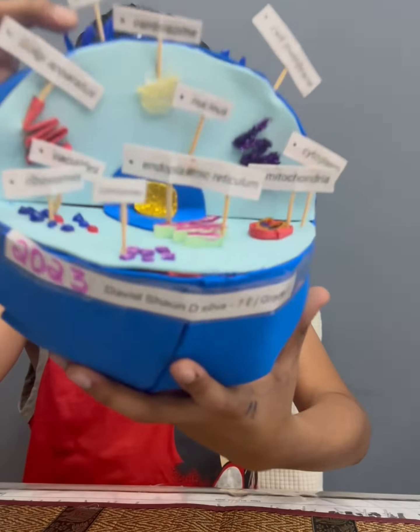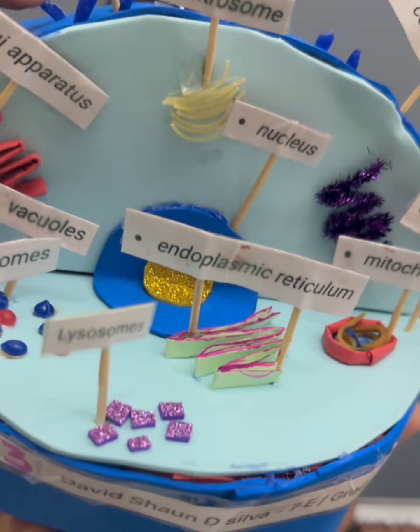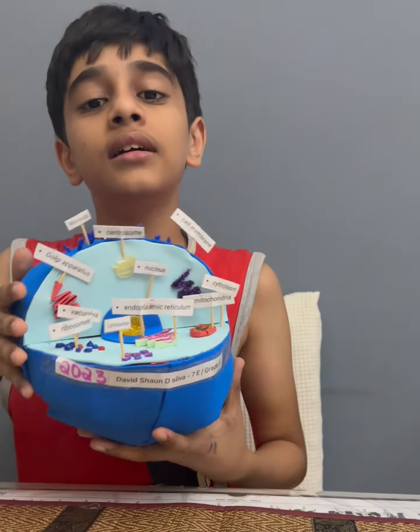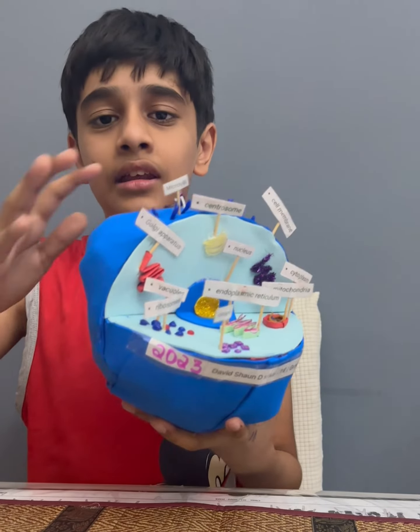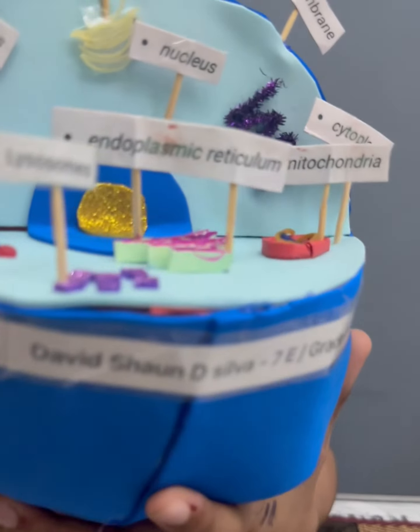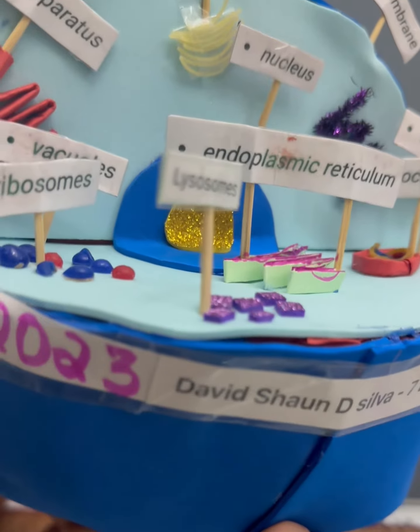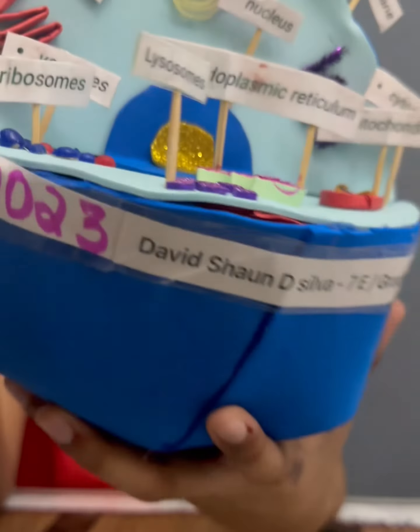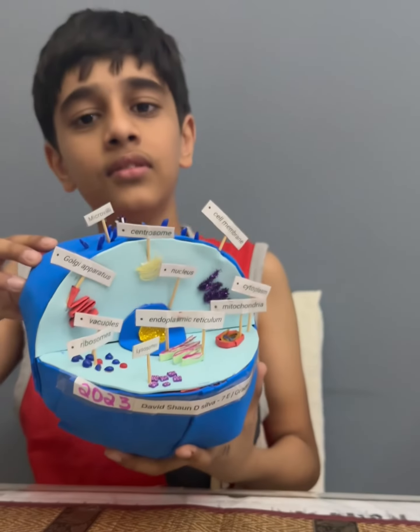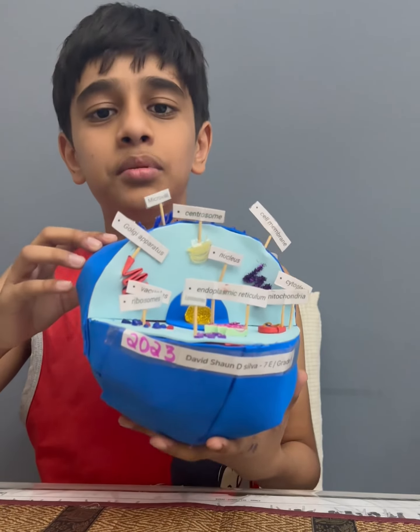This is microvilli. Their purpose is to increase the surface area of the cell's membrane, resulting in a more effective secretion of substances.